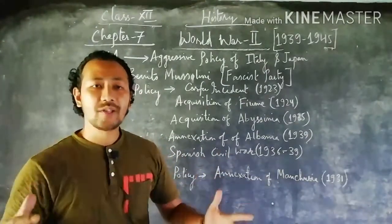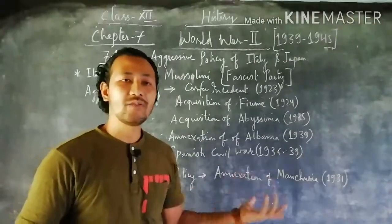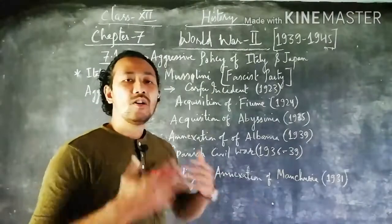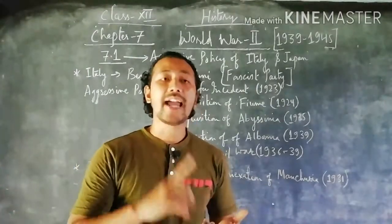When the League of Nations came to know about Japan's invasion over Manchuria and Manchukuo, they warned Japan. But Japan did not bother about the League of Nations and denied to be a part of it.